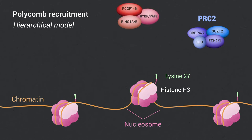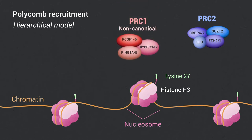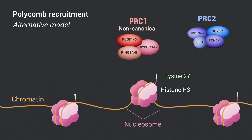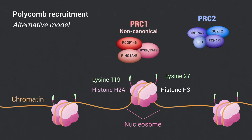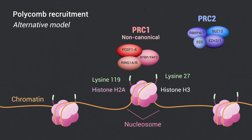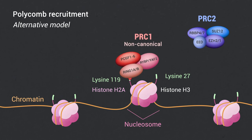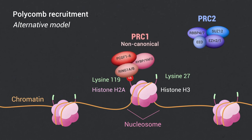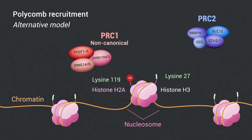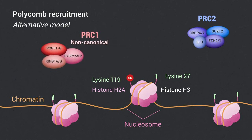The absence of CBX proteins in non-canonical PRC1 implies the existence of alternative mechanisms, in which non-canonical PRC1 is first recruited on chromatin and ubiquitylates H2A on lysine-119.